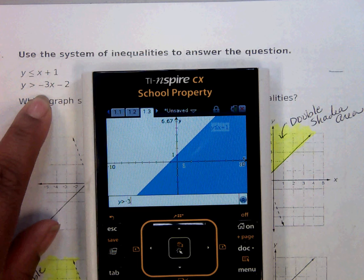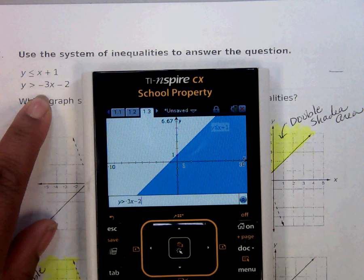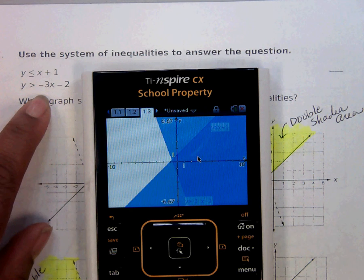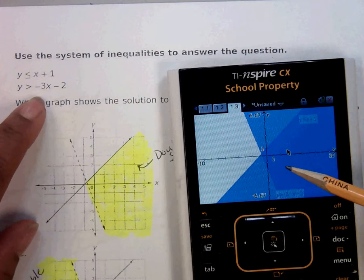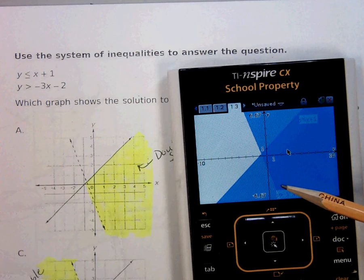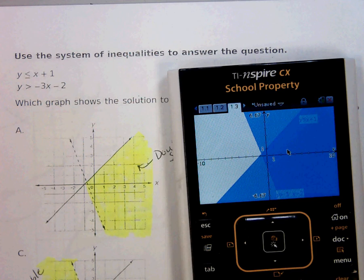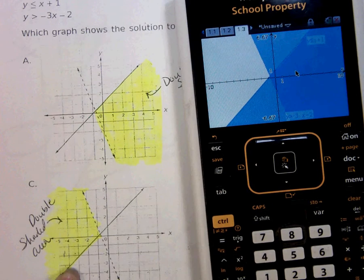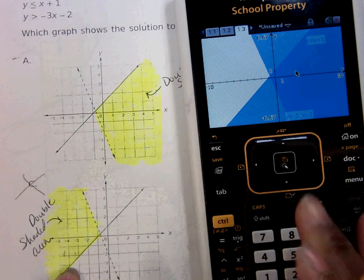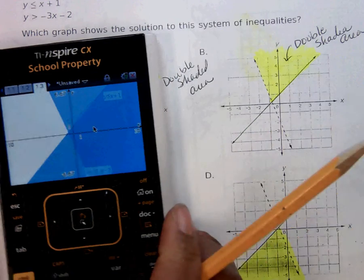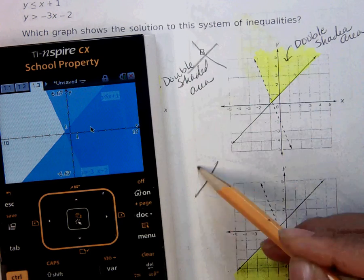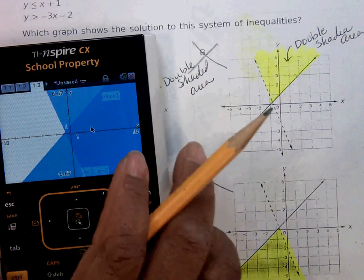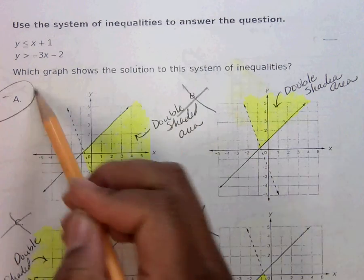Now negative 3x minus 2, and the double shaded region sits on the right, so that looks like A. It's definitely not C. C is on the left, and B is at the top, D is at the bottom, so it is A. Let's see if that is true.